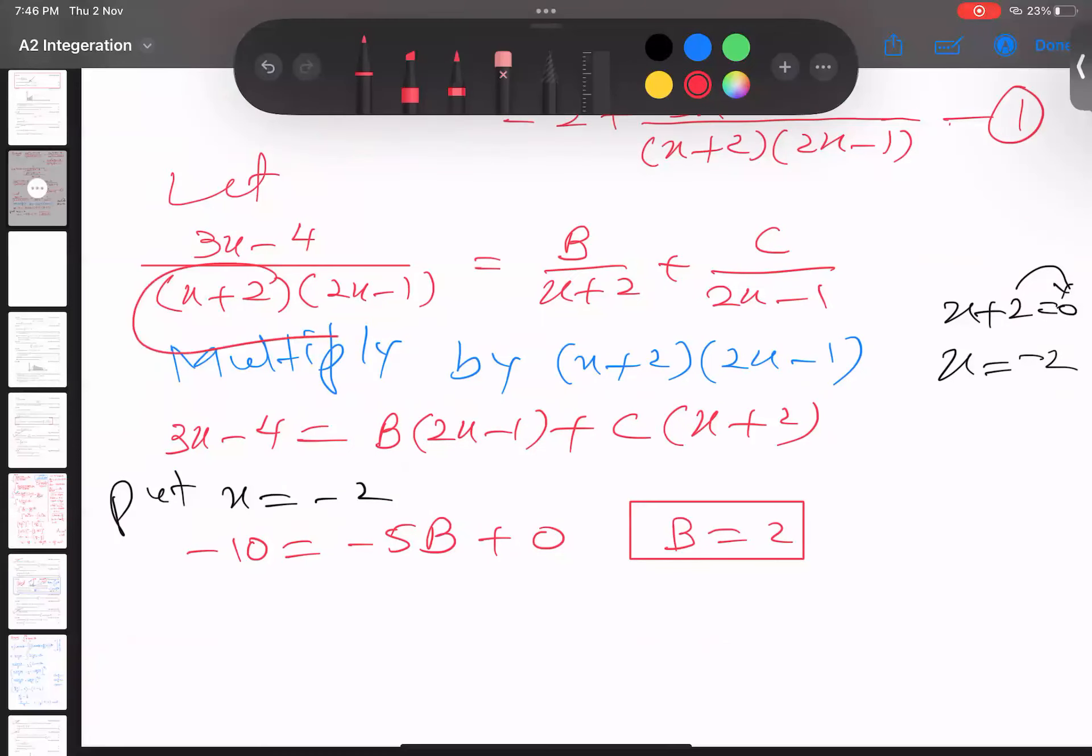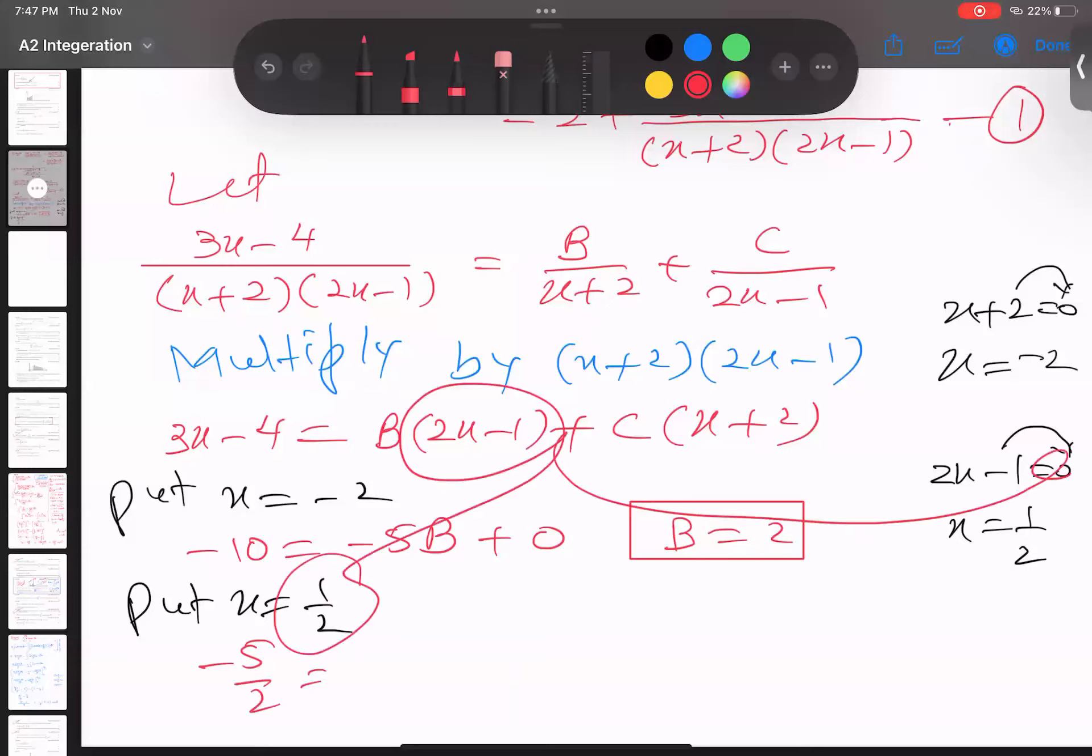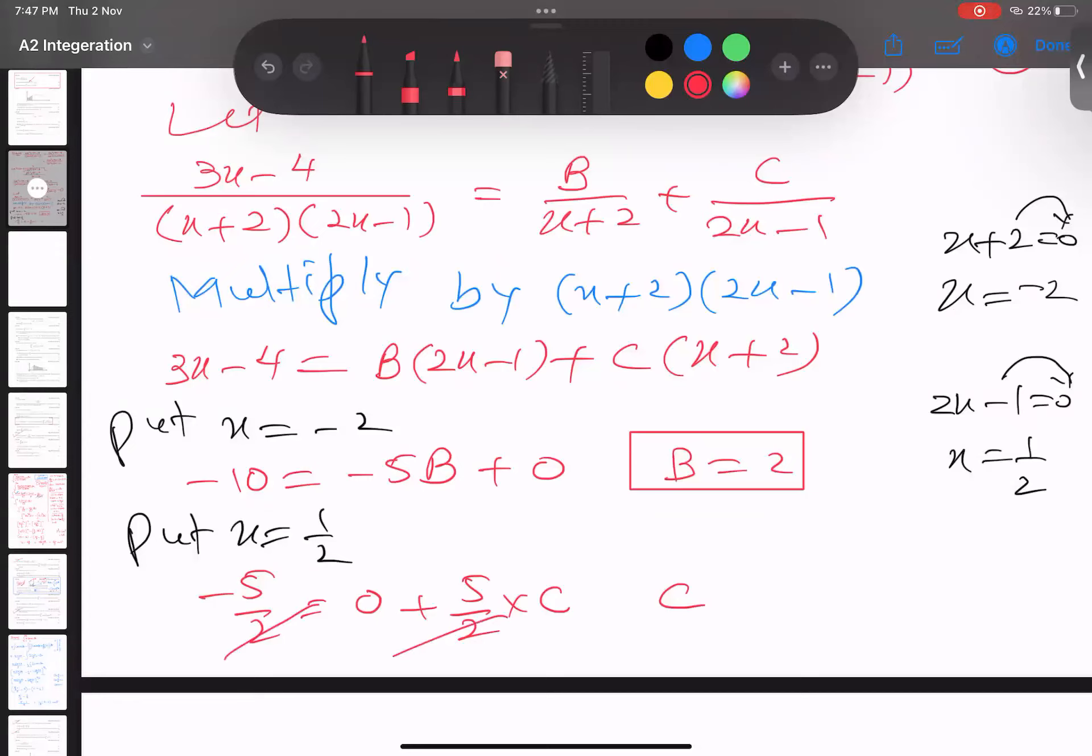First I plug in this equal to 0, and now I plug in this equal to 0. So 2x - 1 equal to 0, 1 goes there and 2 divides. So put x equals 1 over 2. When I plug in 1 over 2 here, I'm getting, I've checked in my calculator, 3 divided by 2 minus 4 gives minus 5 over 2. When I plug in half here this is 0, so this full gone. When I plug in half here, half plus 2 gives 5 by 2, so 5 by 2 times C. And C value, 2s cancel, 5s cancel, minus 1. So C becomes minus 1.